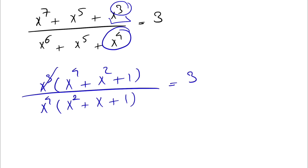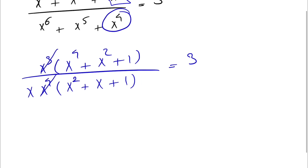From here we can cancel out x cubed, and we end up with x in the denominator. We need to make sure that x cannot be 0, because that would make our denominator 0. So x equals 0 is not a valid answer.